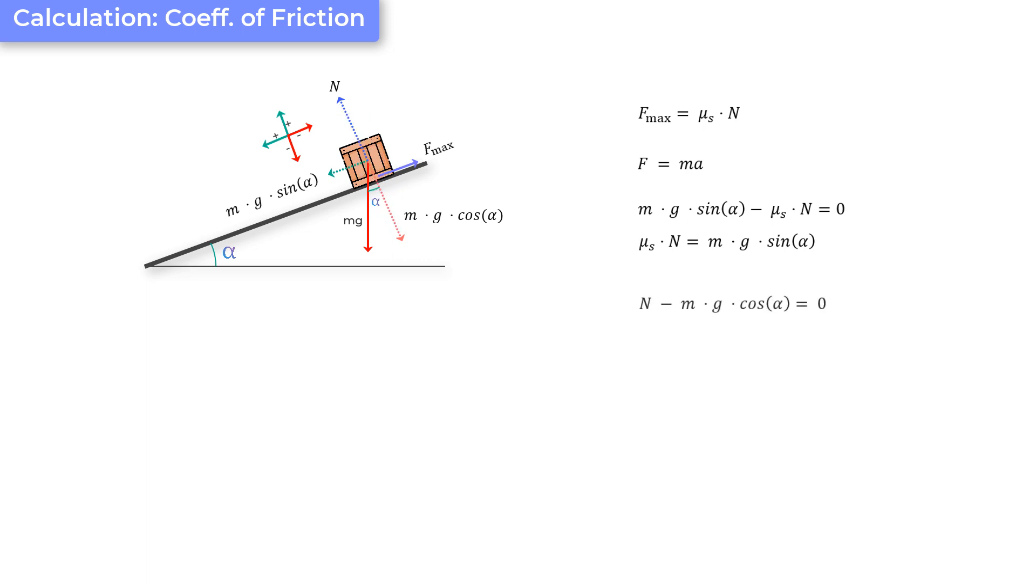Now, if we write F is equal to ma for this axis, what you get is n minus mg cos alpha is equal to ma where ma again becomes 0 since there is no acceleration in this direction as well. Or n is equal to mg cos alpha and if we use this value of n in this equation, what we get is mu s into mg into cos alpha is equal to mg sine alpha. And you can see mg cancels on both sides and what we get is mu s or the static coefficient of friction is equal to tan alpha.